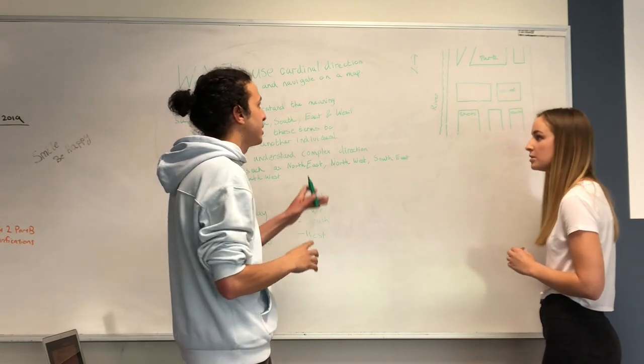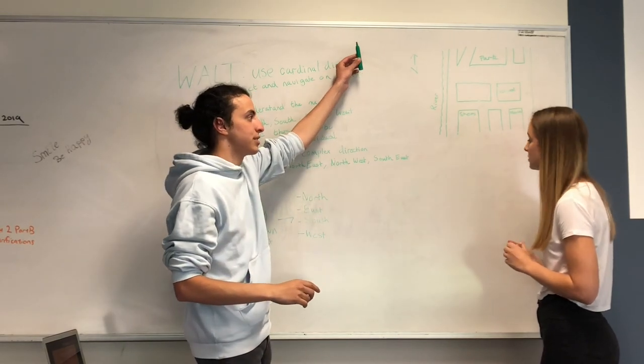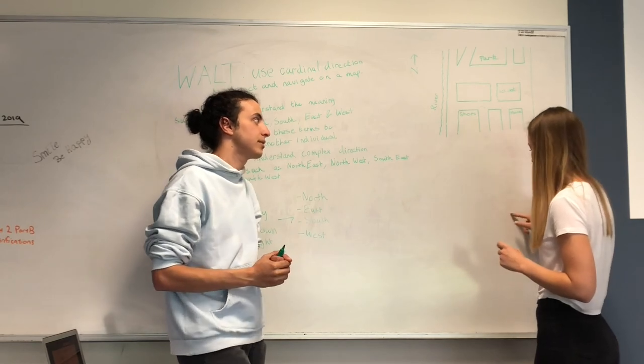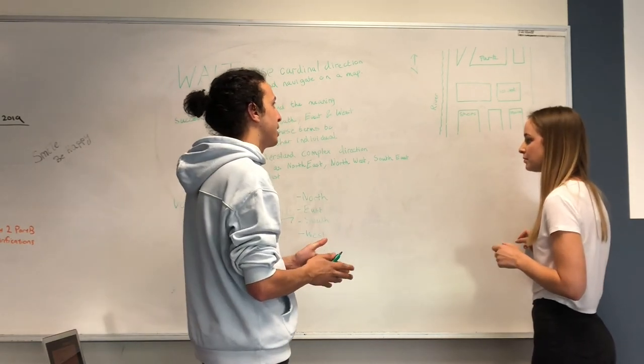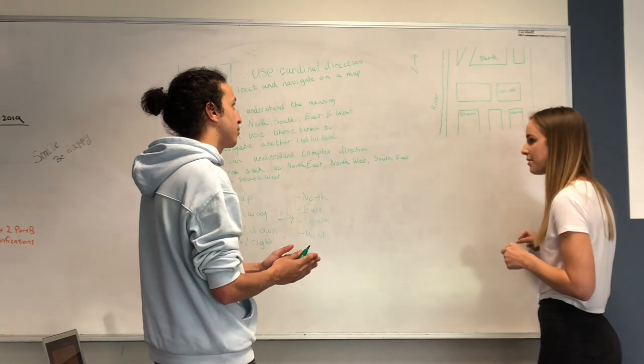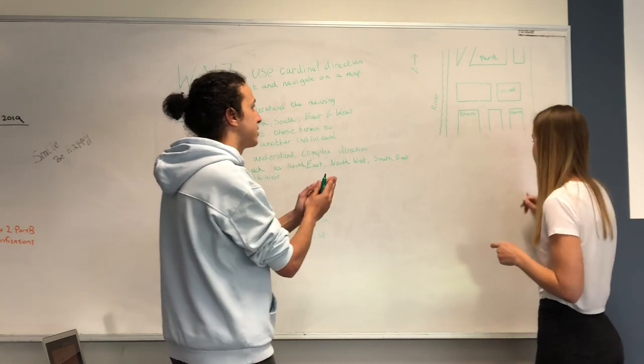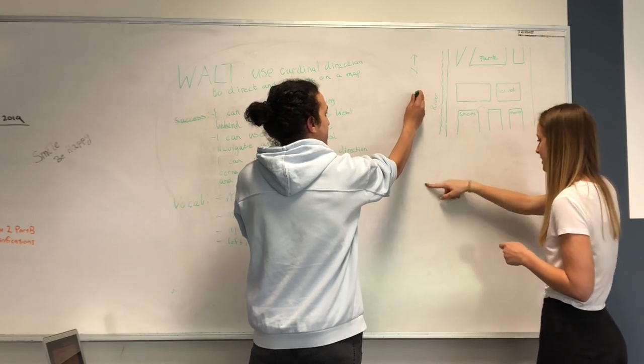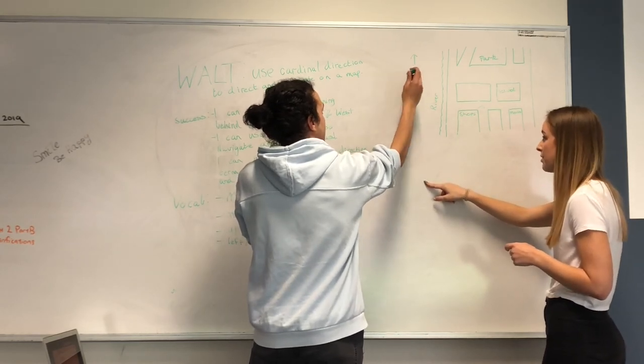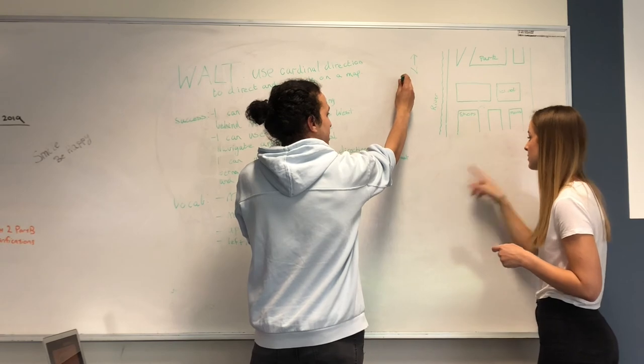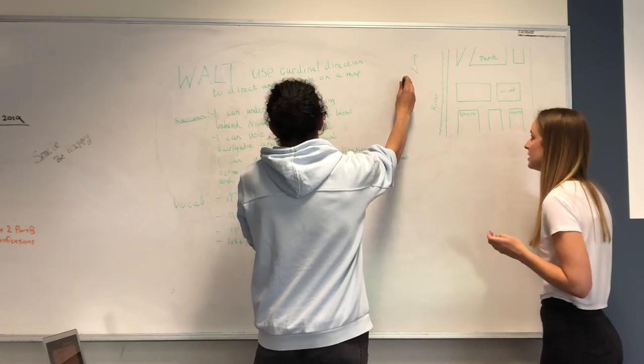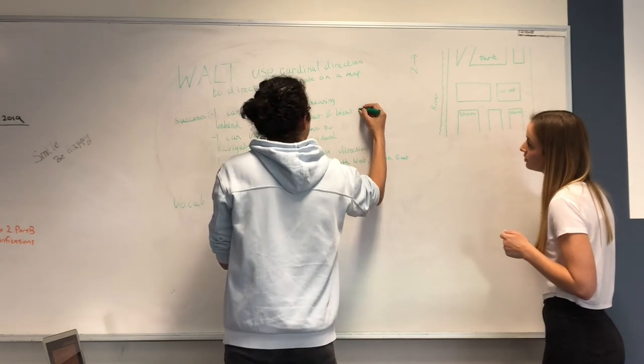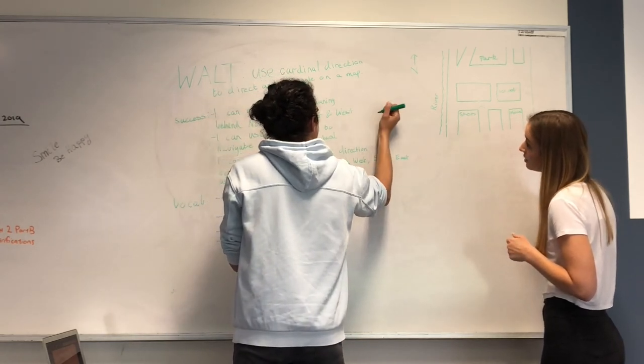So going on our summary, if we know that north is this way, what would the opposite to north be? South. And if we know north is this way and we have the south here, which way would the west be? And which way would the east be with our last option? The opposite to the west. So we can understand north, south, east, and west.